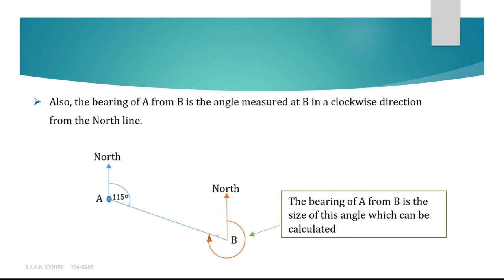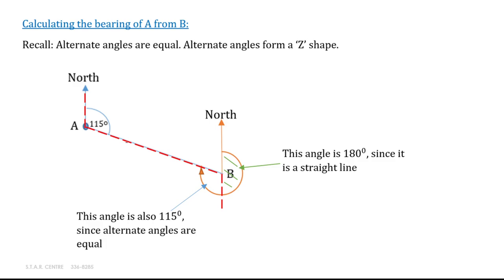If we are at B and need the bearing of point A, then the bearing is a clockwise direction at point B from the north line. The north line is drawn at point B because we are considering ourselves to be located at B. If we want to get directions to get to A, we take the clockwise angle from the north line at point B. This bearing can be calculated — it's not given in this example, but it's straightforward to calculate.